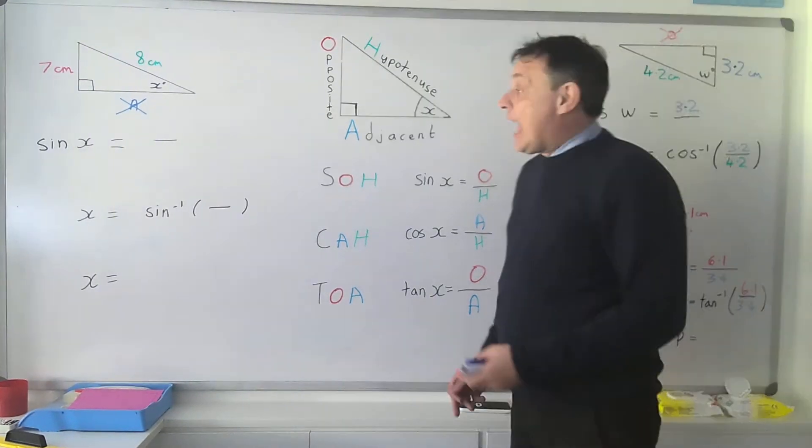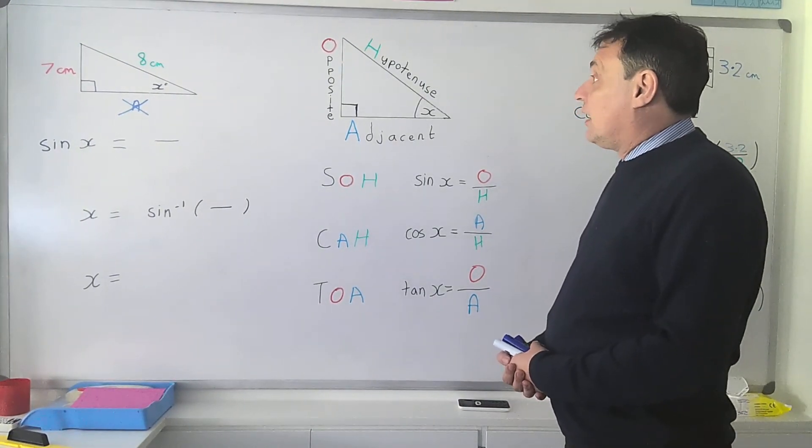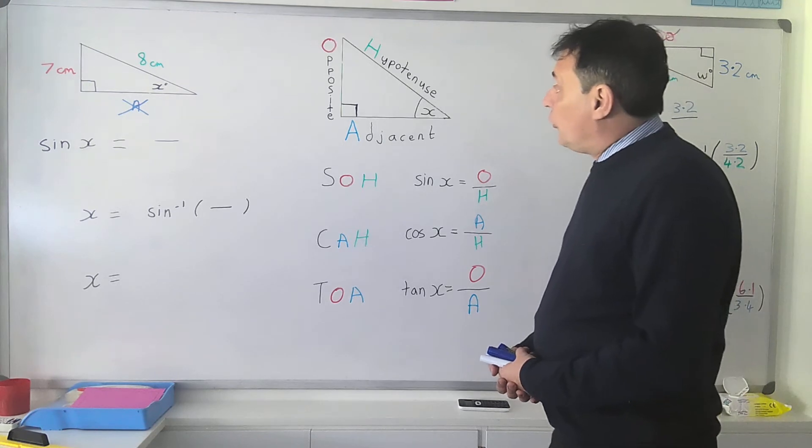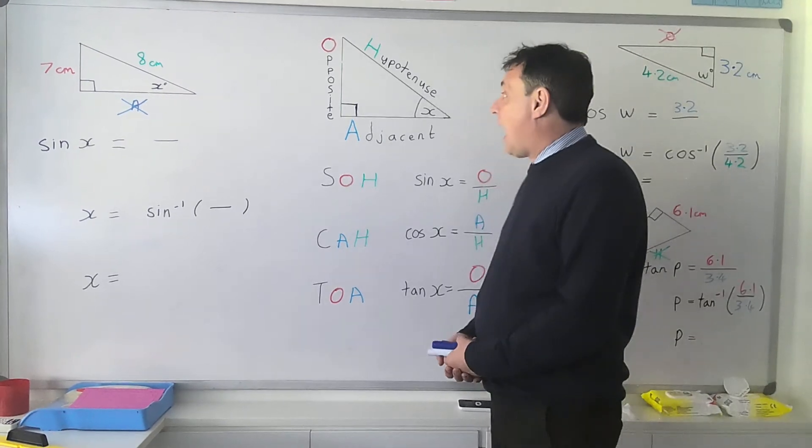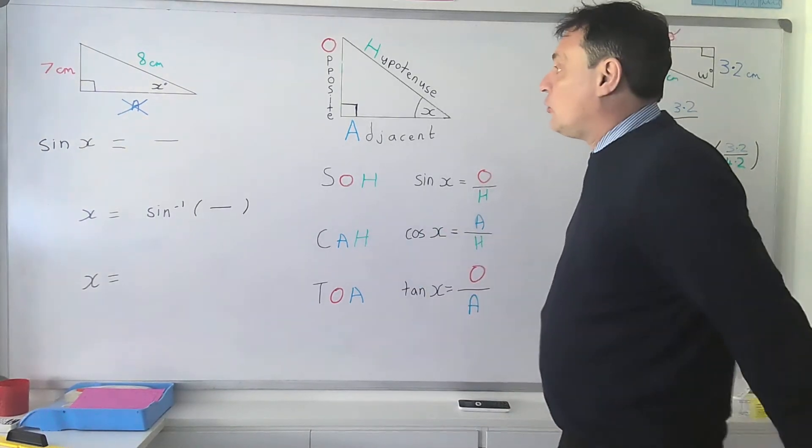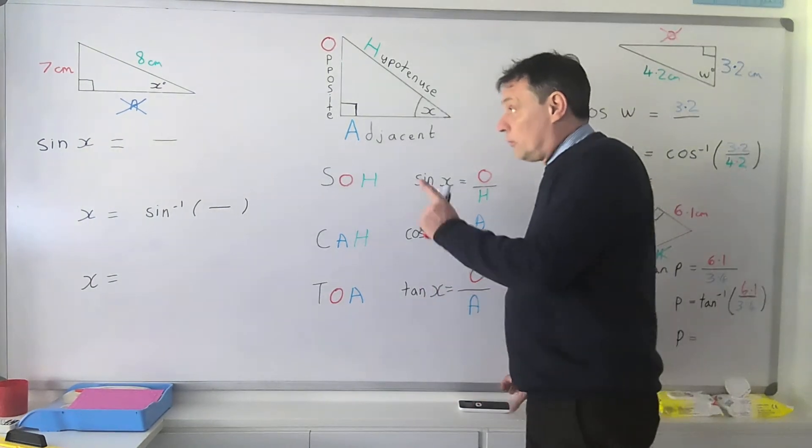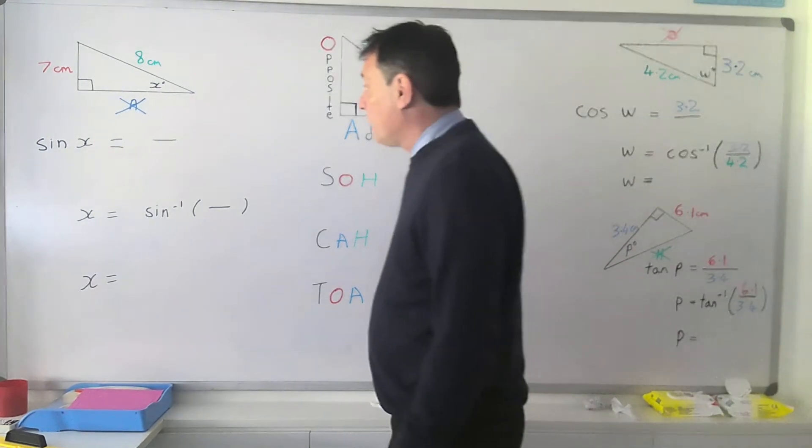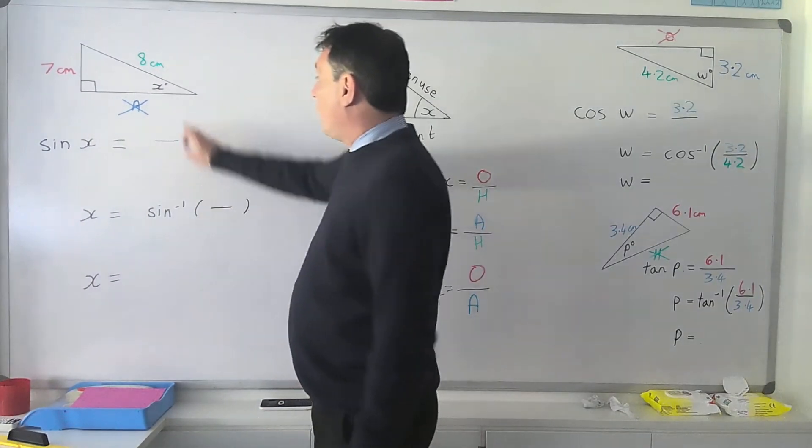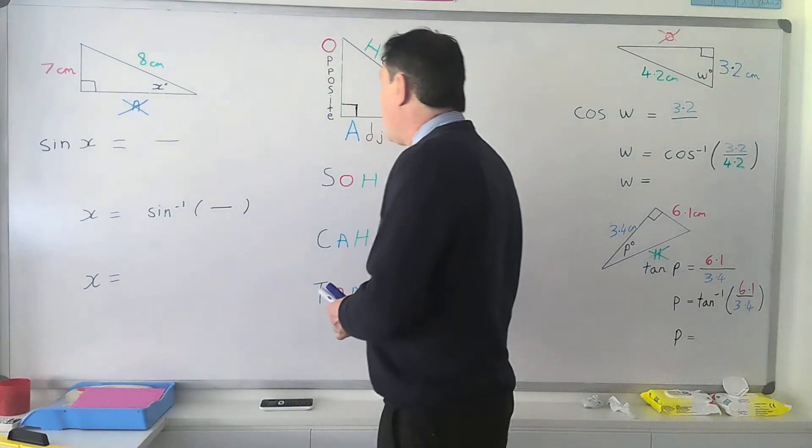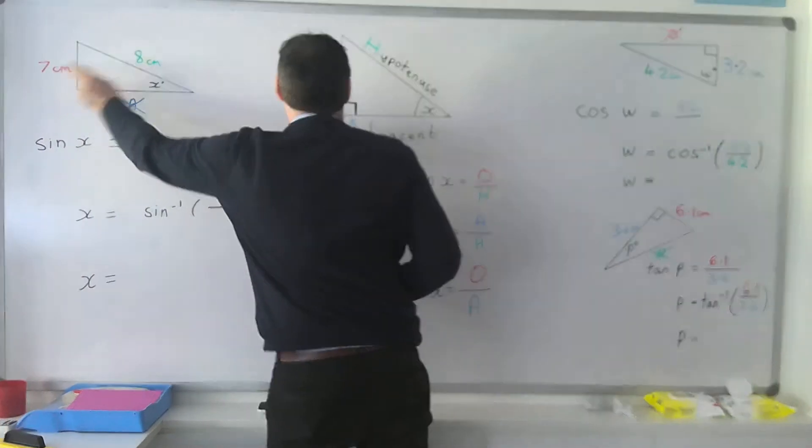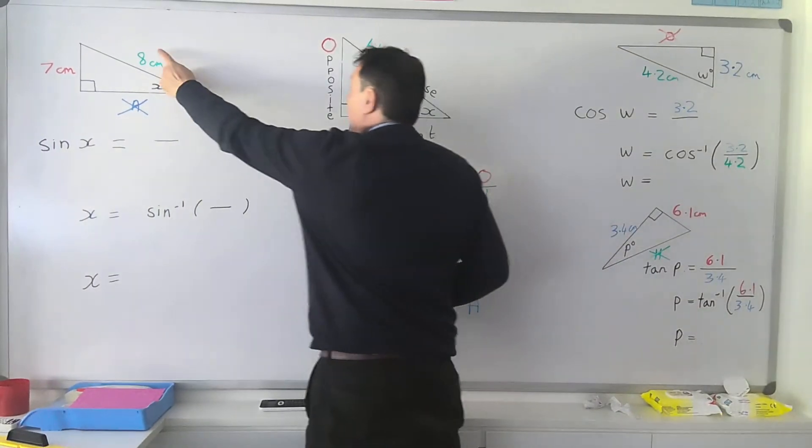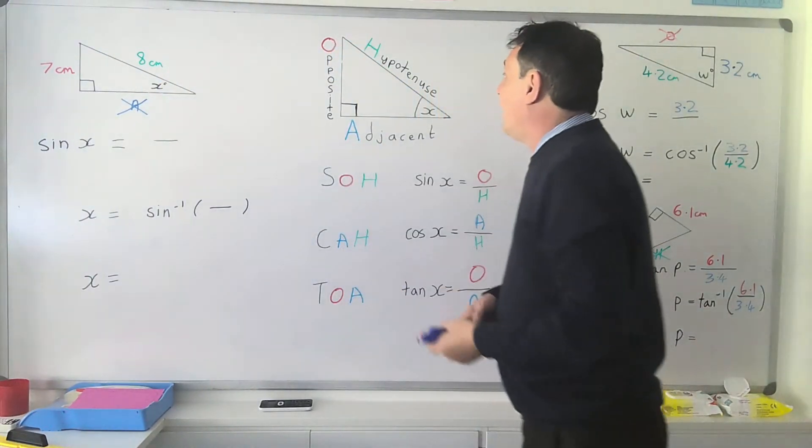Finding a missing angle in a right angle triangle when you've got two of the sides, you're going to do it by using trigonometry. Looking at our first example here, we've got to find the angle x. We know our opposite side in red is our opposite and our hypotenuse side is in green.